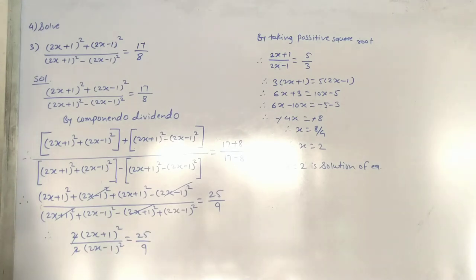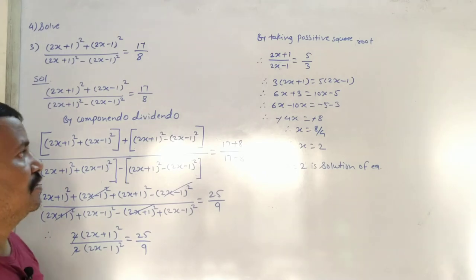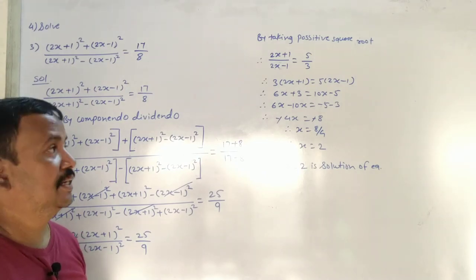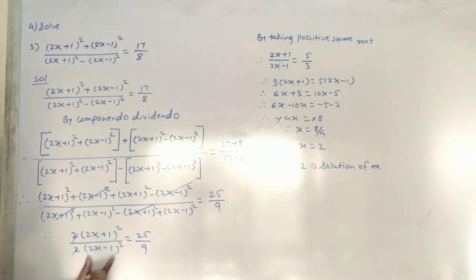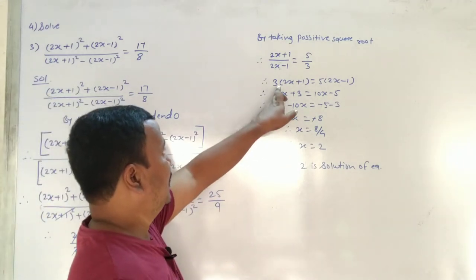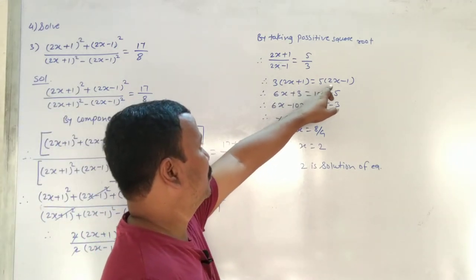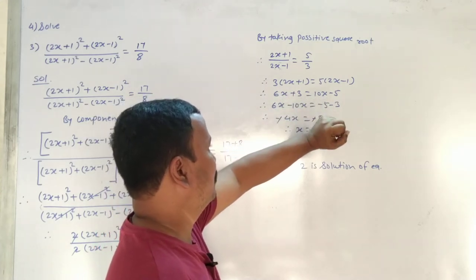By taking positive square root: (2x+1) upon (2x-1) is equal to 5 upon 3. Cross multiply: 3 into (2x+1) is equal to 5 into (2x-1), so 6x + 3 is equal to 10x - 5.